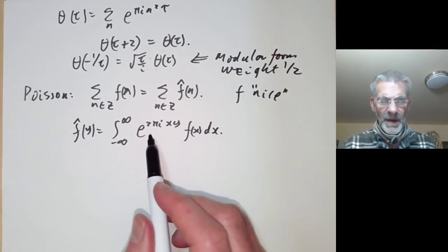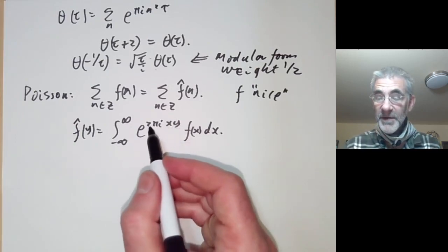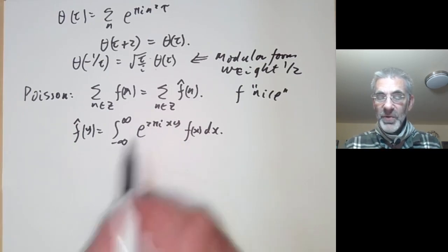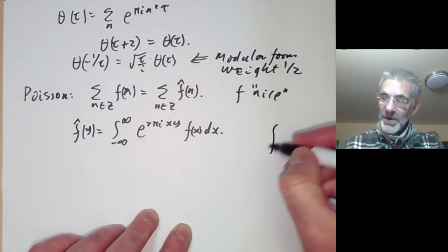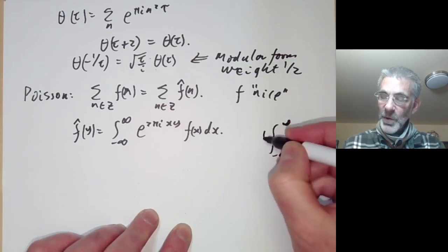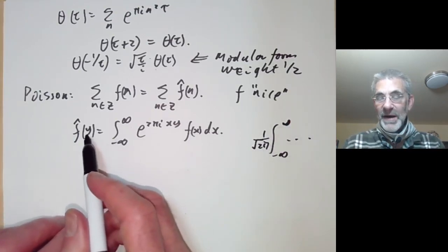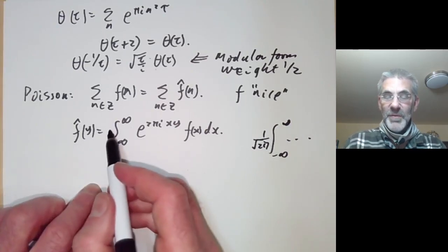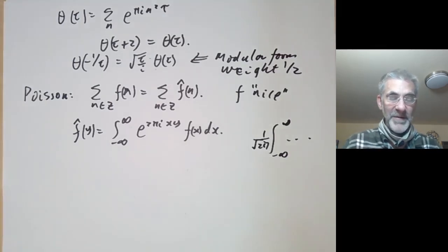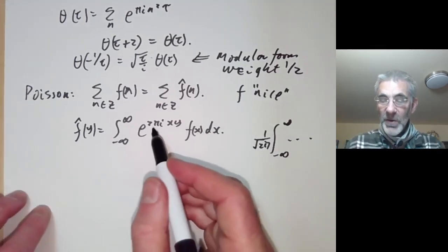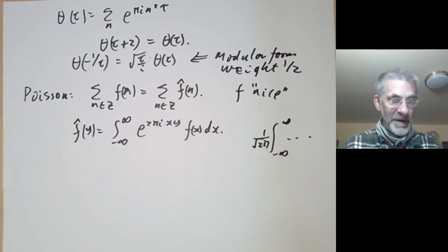If you look at books on Fourier transforms written by analysts and physicists they get very confused about this factor of pi and put it in all sorts of weird places — sometimes 1 over root 2 pi, sometimes a 1 over 2 pi in front of the integral. The correct place to put the 2 pi is in the exponent, and then everything works out very nicely.